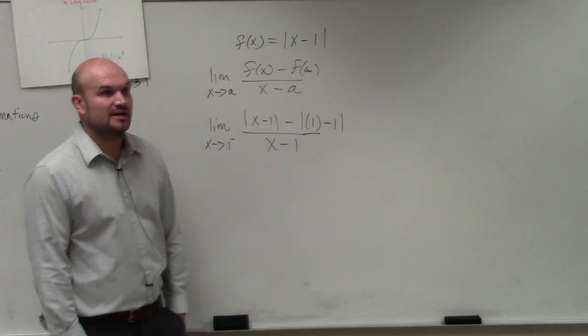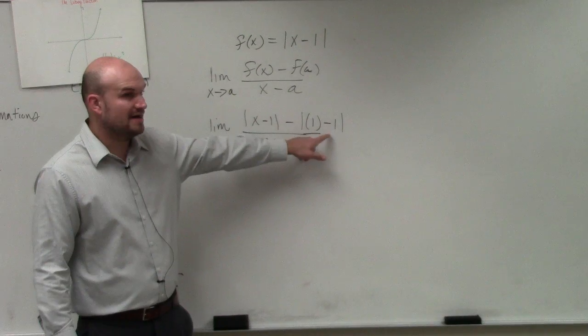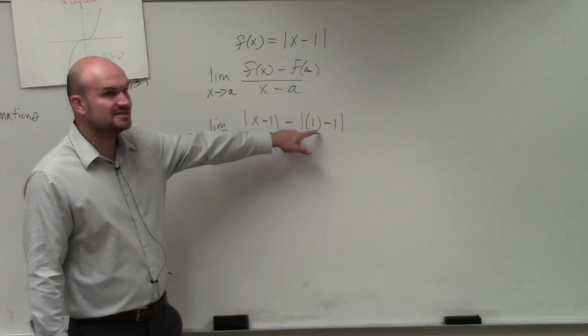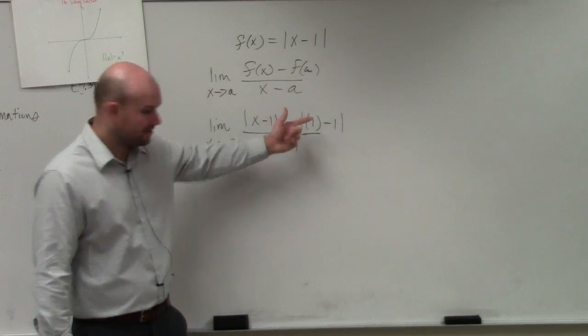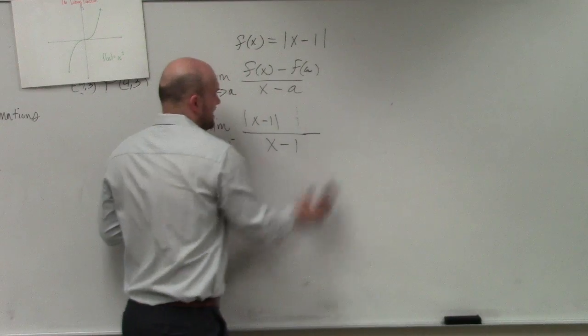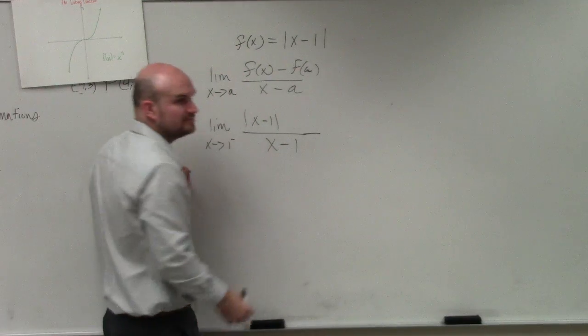That's technically me plugging everything in. f of x, f of a, x, a. Right? But this goes down to 0, right? Which really doesn't even matter anymore anyways, because minus 0 is not going to be, it's going to be eliminated anyways.